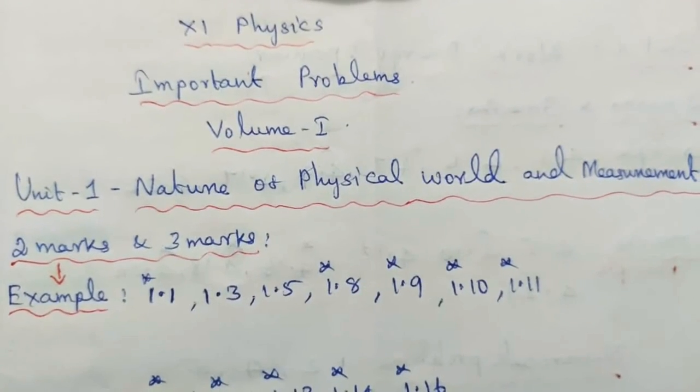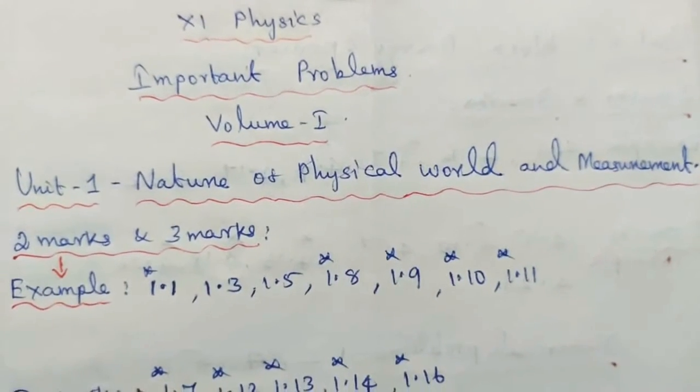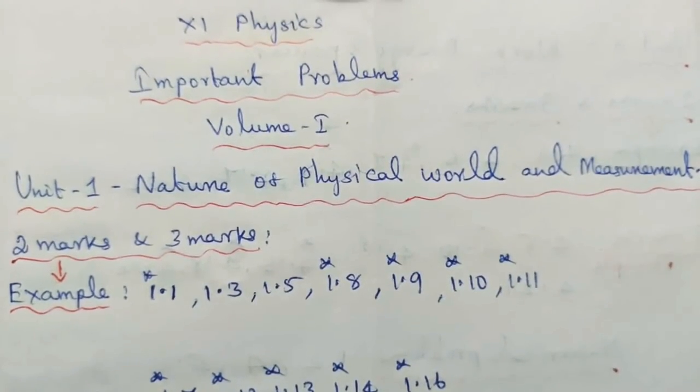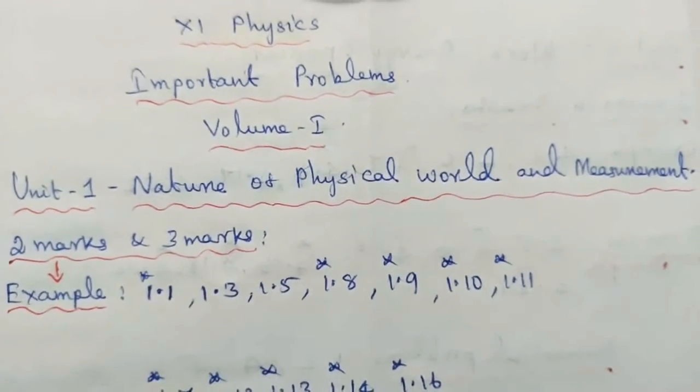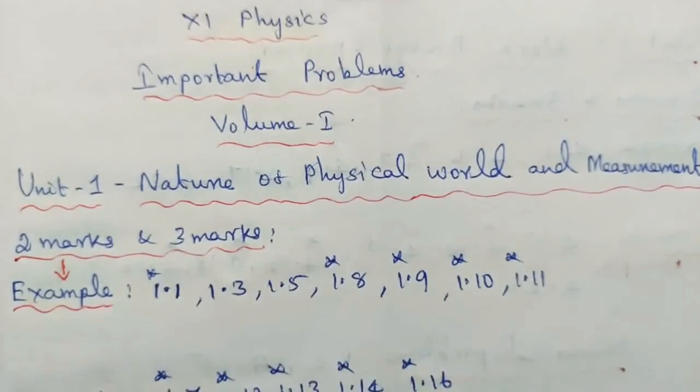7th Physics Important Problems, Volume 1, Unit 1: Nature of Physical World and Measurement — 2 marks and 3 marks.